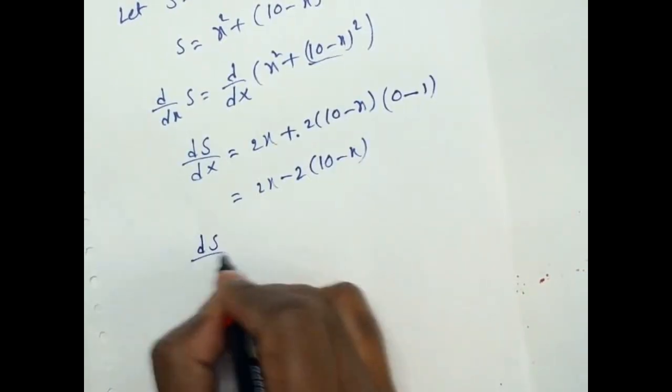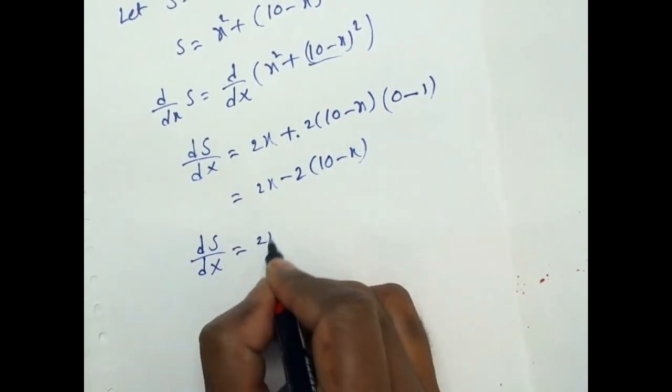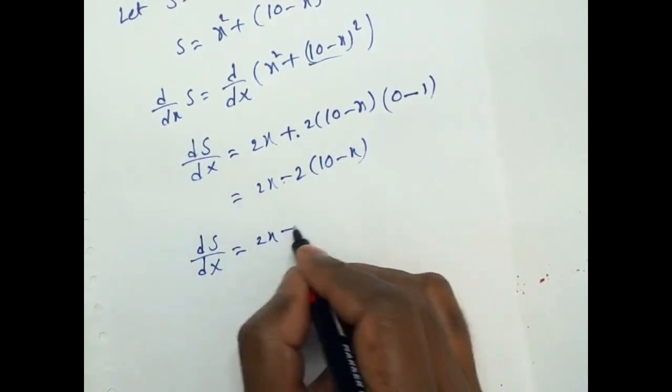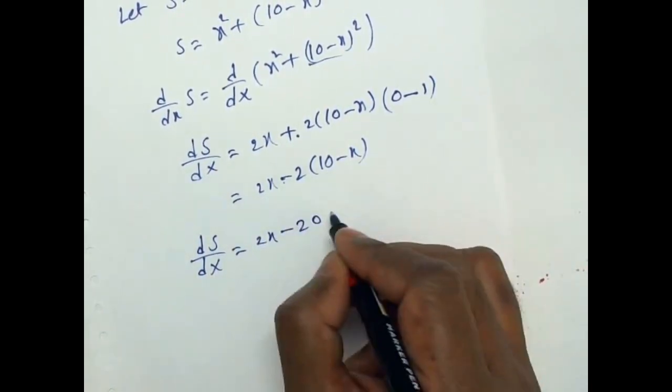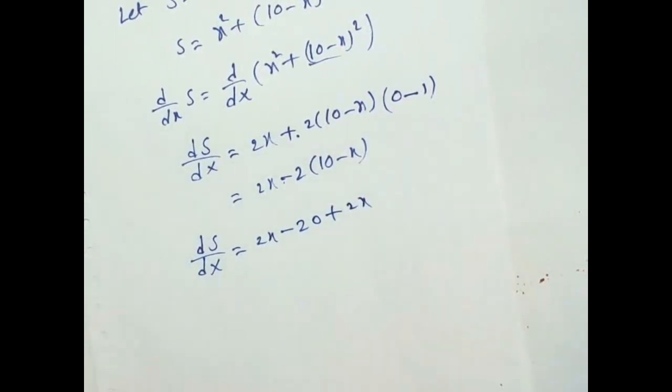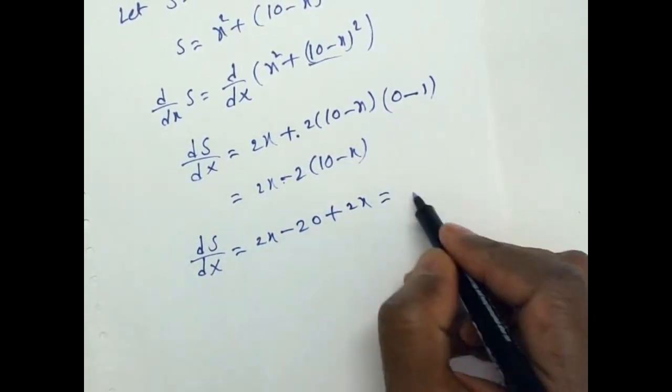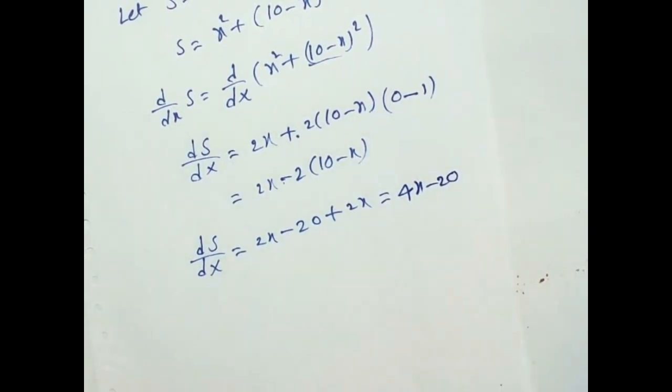dS by dX is equal to 2X minus 20 plus 2X. 2X plus 2X is 4X minus 20.